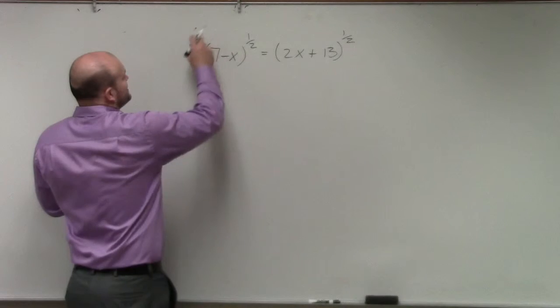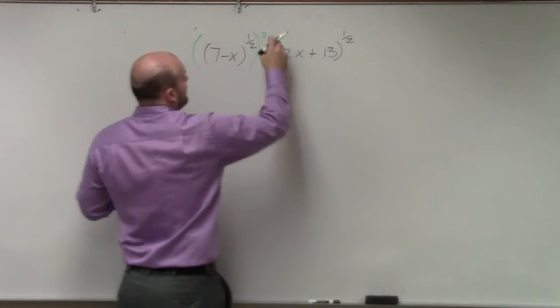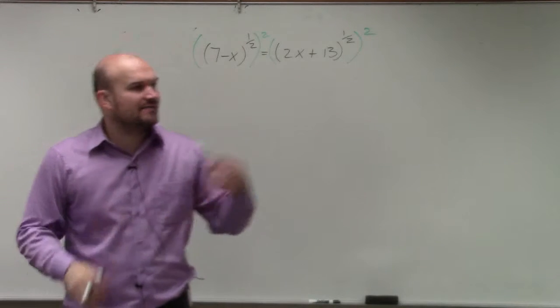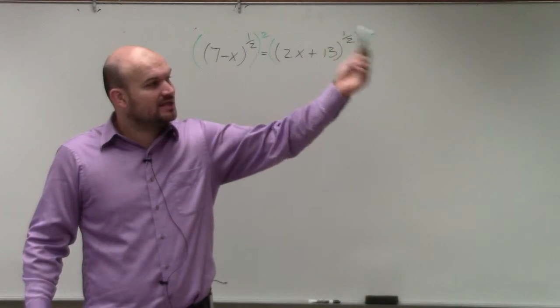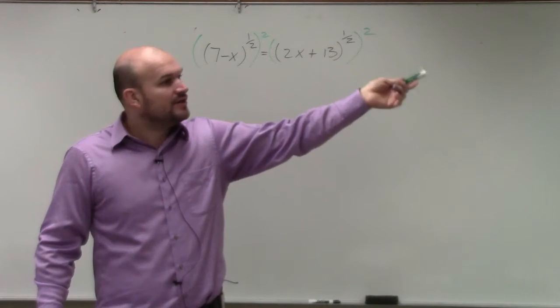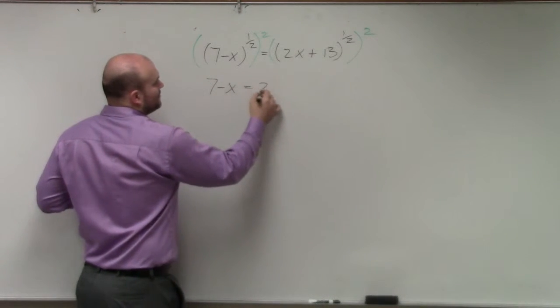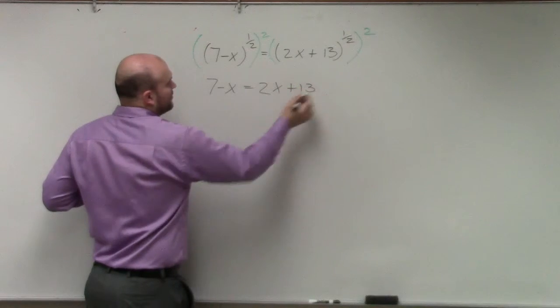So what I'm just simply going to do is just raise this to the second power. Because by using the power rule again, when I have an exponent raised to a power, I multiply the exponents. Therefore, 1 half times 2 is just 1. So therefore, I'm just left with the equation 7 minus x equals 2x plus 13.